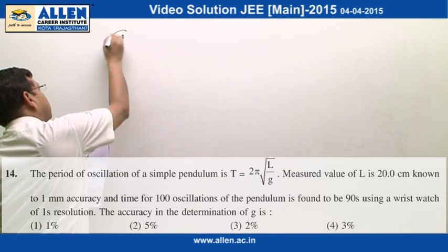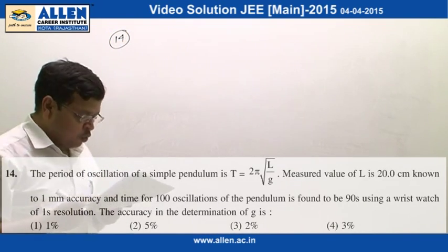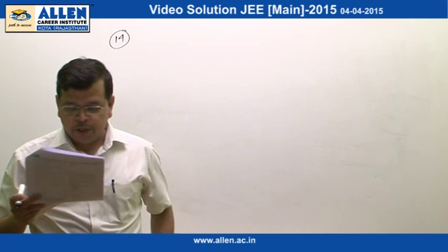Question number 14. In this question, the period of oscillation of a simple pendulum is being measured and we have to find accuracy in the determination of g.